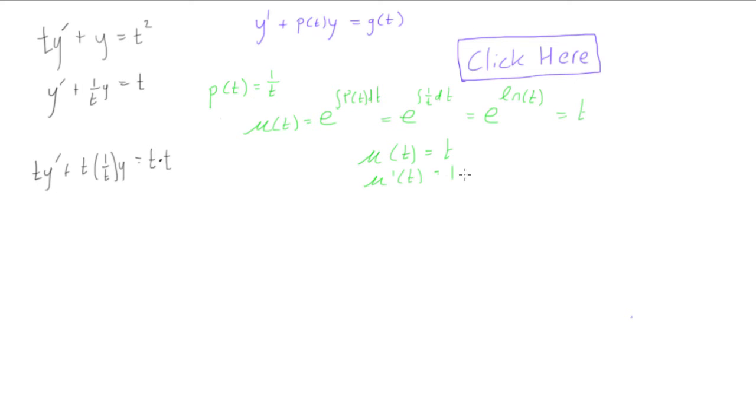Now we said that mu prime of t is equal to 1. So if we notice here, we have mu times y prime plus mu prime times y. That's the result of the product rule. Again, that was really discussed in this other video here.